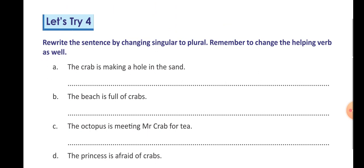A hole here. When we changed crab to crabs in plural, we changed 'is' to 'are'. When crabs changed, the hole will also become plural, so hole will become holes, H-O-L-E-S, and we will remove A.